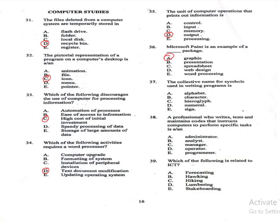Question 37: The collective name for symbols used in writing programs is — A: alphabet, B: character, C: paragraph, D: numeral, E: sign. The correct answer is B, character.